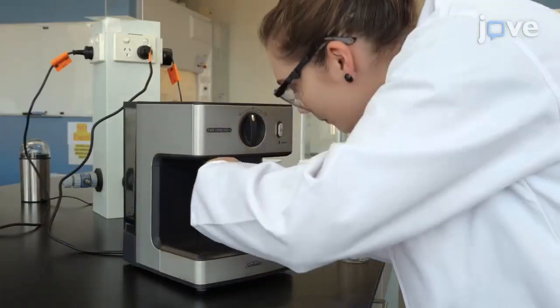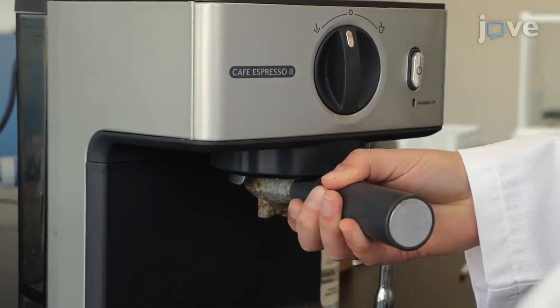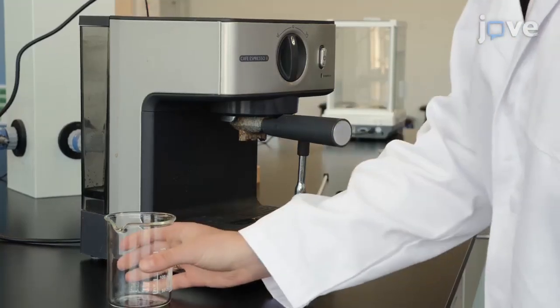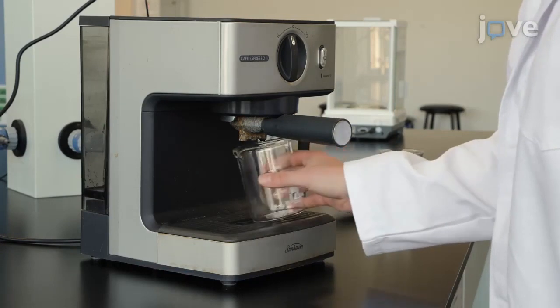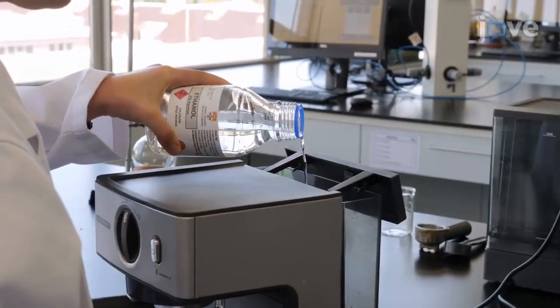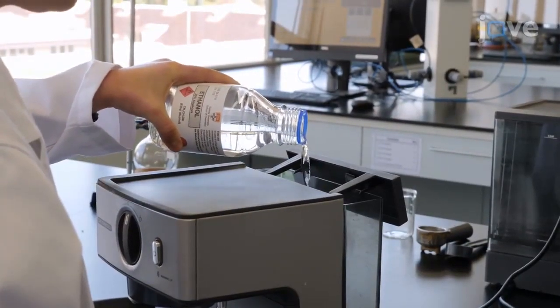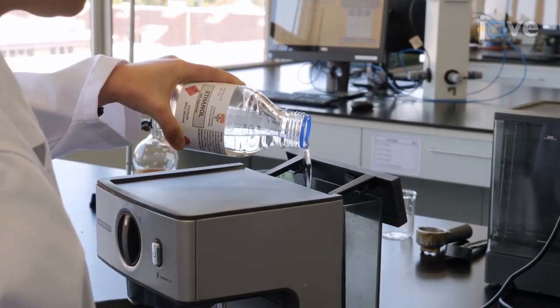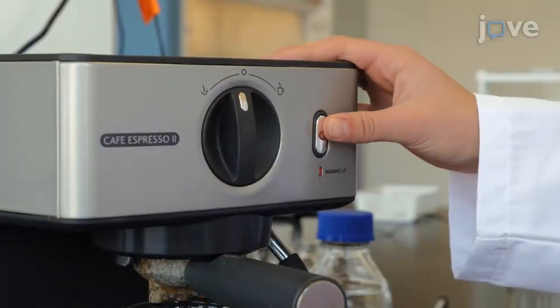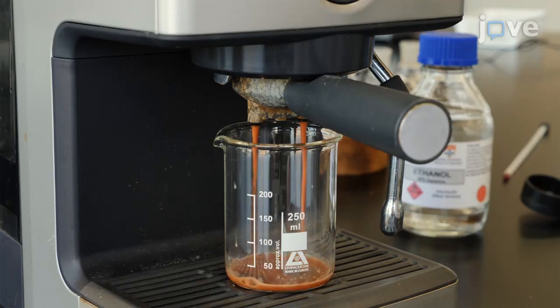Load the portafilter into the espresso machine and place a clear 250-milliliter beaker beneath it. Add a solution containing 30% ethanol in water to the water tank. Using the espresso machine, collect 100 milliliters of the extract.